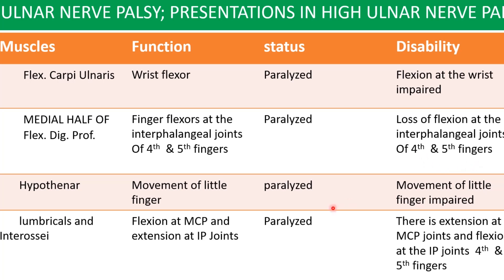The ulnar nerve also supplies all the hypothenar muscles, so movement of the little finger will be affected. For the lumbricals and interossei, their function is flexion at the metacarpophalangeal joint and extension at the interphalangeal joint. In high ulnar palsy these muscles are affected, causing impairment: there will be extension at the metacarpophalangeal joint and flexion at the interphalangeal joint.